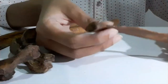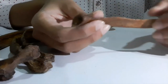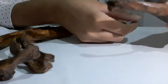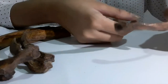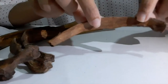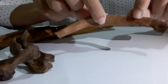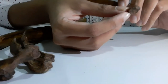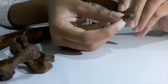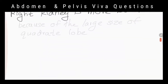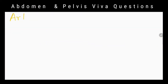This is the 12th rib. It has no angle, no subcostal groove, and it is short. It has only one articular facet in the head and no tubercle.